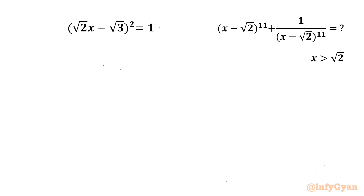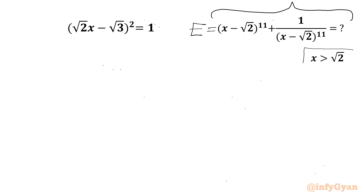Hello everyone. Welcome back to Infigar. In this video we will be solving another very interesting question from algebra. The given equation is: square root of (2x minus root 3) whole square equals 1. We have to evaluate an expression E, given that x is greater than square root 2.